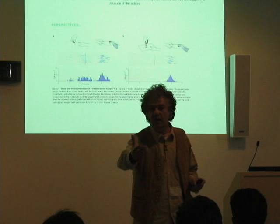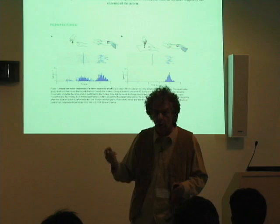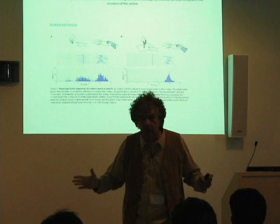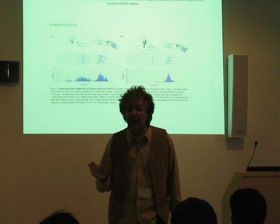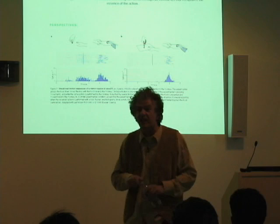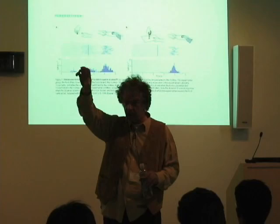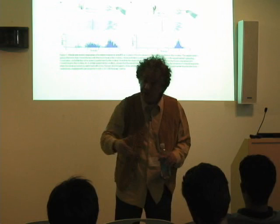Mirror neurons are neurons in the monkey — also in the human, but originally discovered in primates. They have the following property: they are active whether the animal is performing a task or whether the animal is watching somebody else perform the same task. In other words, whether the input is coming from the vision system or the motor system, that neuron is going to be active and say 'grasp' — regardless of whether it is a visual grasp or a motoric grasp. The monkey is having abstract representations of action.